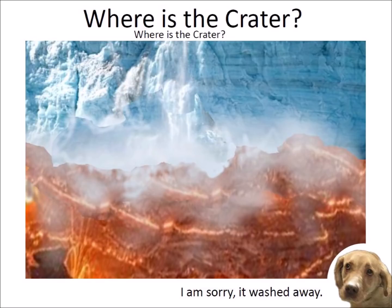An extraterrestrial impact on an ice sheet would leave few traces on the land because the layer of ice attenuates the force of the impact, preventing the formation of a typical crater. This has been demonstrated experimentally multiple times by Professor Peter Schulz from Brown University. In addition, the heat of the impact melts the surrounding ice, causing great flooding that scrubs the land and carries away evidence of the impact. Identifying the location of an impact on ice requires calculating the convergence point of the ejecta produced by the impact, but the convergence point is not likely to contain a typical crater due to the subsequent flooding.